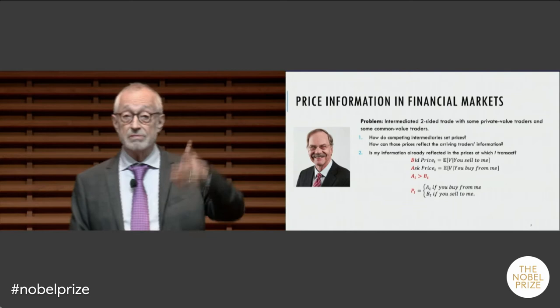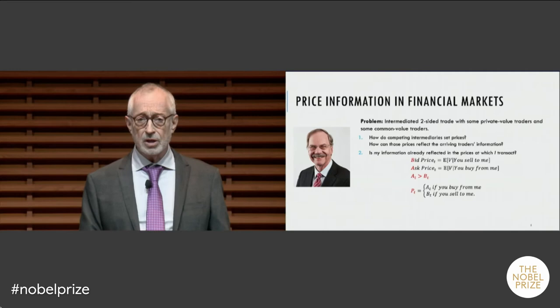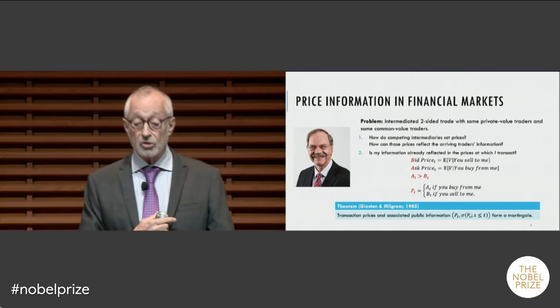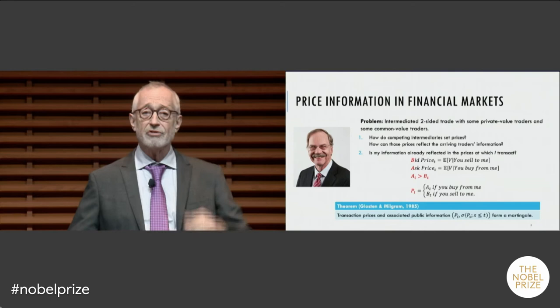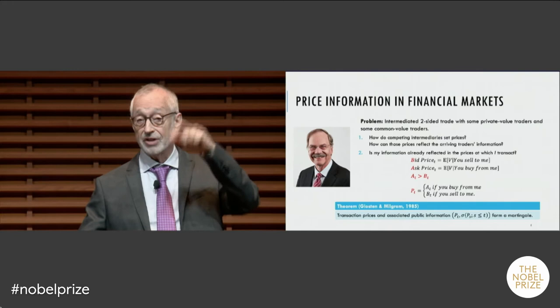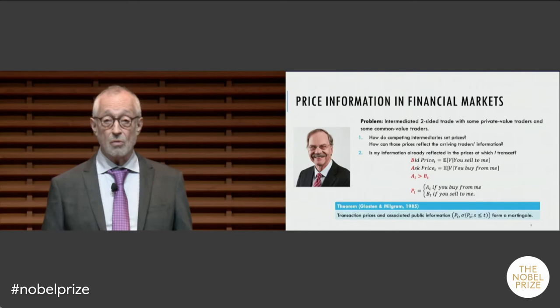One of the main theorems of the Glosten-Milgram paper was that transactions prices and the associated public information form a martingale — a mathematical object meaning there's no drift in the prices. When prices step up, they tend to stay higher; they might fluctuate up or down, but they don't systematically come back down or continue to drift up. This became a fairly standard and well-known model of trading in financial markets.